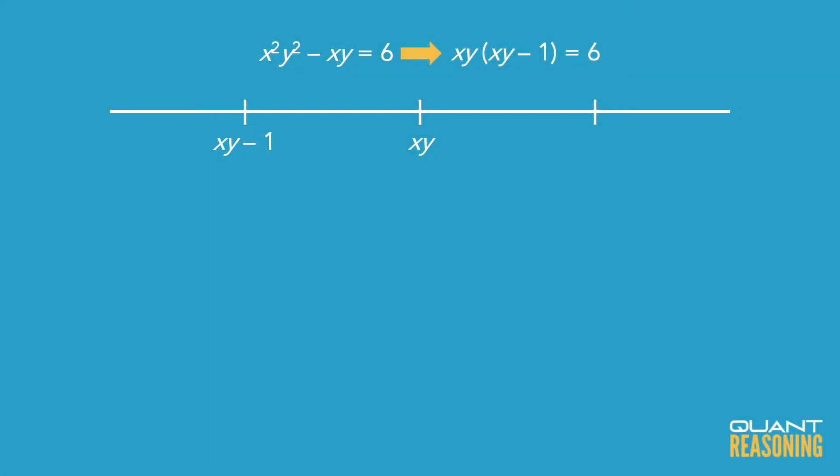So we're looking at the product of two numbers which are one away from each other on the number line, and their product is 6. Can you think of two numbers that are one away from each other on the number line whose product is 6?